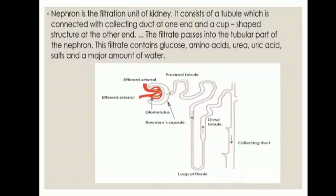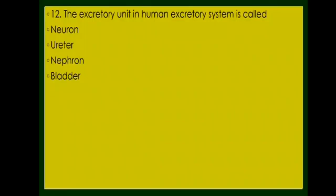There are many questions asked on nephrons. It is the filtration unit of the kidney — the structural and functional unit of the kidney excretory system. It consists of a tubule connected to the collecting duct at one end and a cup-shaped structure at the other. The filtrate contains glucose, amino acids, urea, uric acid, salts, and a major amount of water. Twelfth question: The excretory unit in the human excretory system is called — neuron, ureter, nephron, or bladder? The answer is nephron.